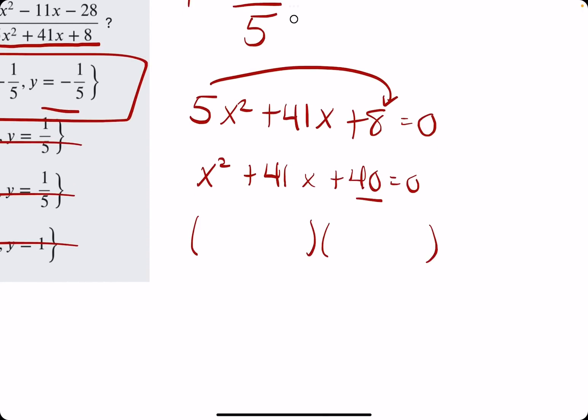Then we can factor this like usual. So, multiplying to 40, adding to 41 would be 40 and 1, both positive. But then, before we set these equal to 0, we go ahead and divide back out by the number that we multiply by at the start. And that is 5.